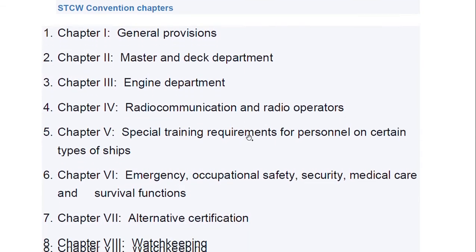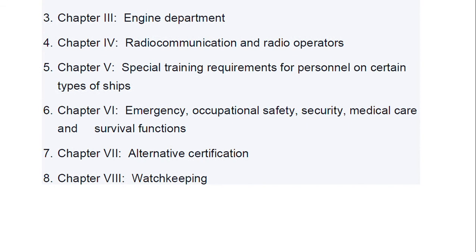When we talk about STCW convention chapters, surveyors often ask how many chapters there are. Chapter I is general provisions; Chapter II is master and deck department; Chapter III is engine department; Chapter IV is radio communication and radio operators; Chapter V is special training requirements for personnel on certain types of ships; Chapter VI covers emergency, occupational safety, security, medical care and survival functions; Chapter VII is alternative certification; and Chapter VIII is watchkeeping.